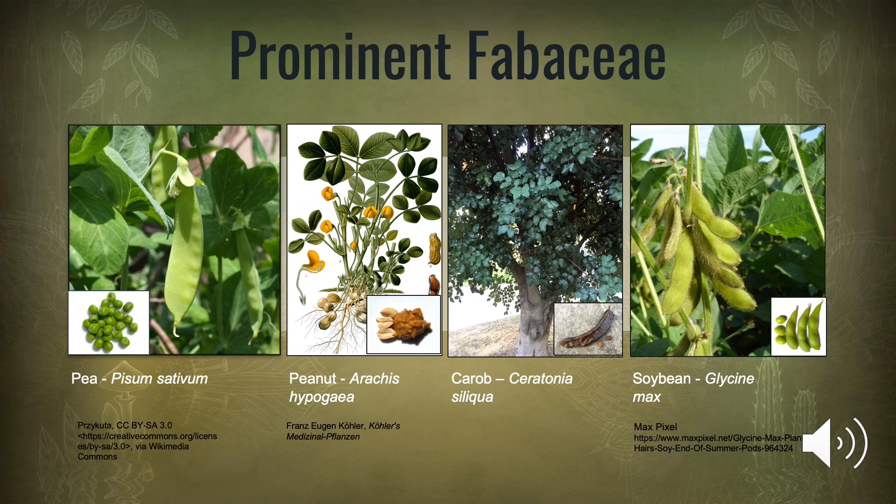Some prominent Fabaceae you'll likely already know include the pea plant, the peanut plant, carob and soybean, and many, many more.